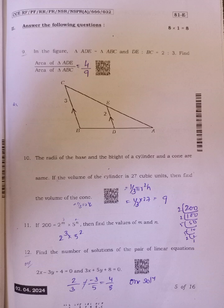Eleventh, if 200 equals 2 to the power of M into 5 to the power of N, then find the values of M and N. 2 to the power of 3 into 5 square, that is M value will be 3, N value will be 2.